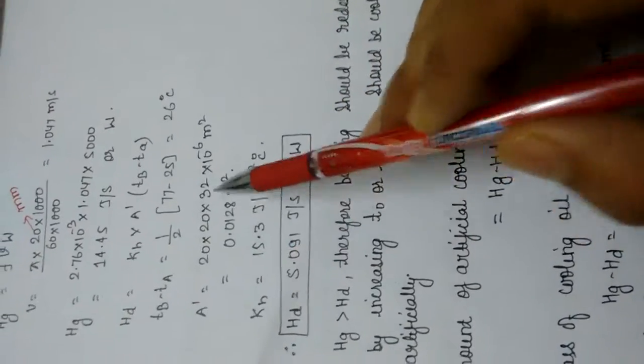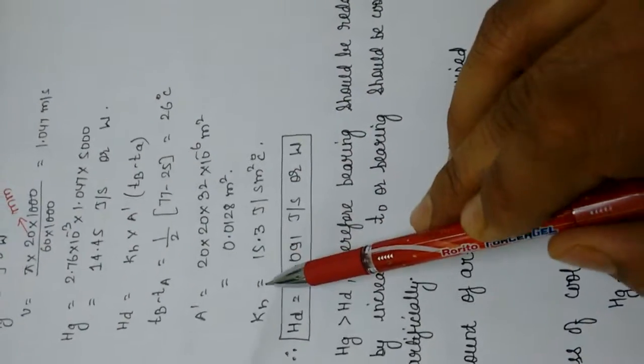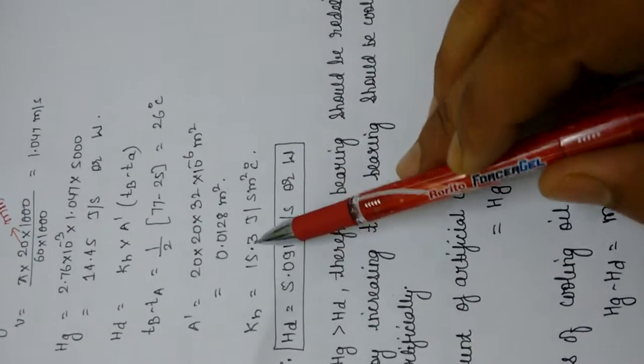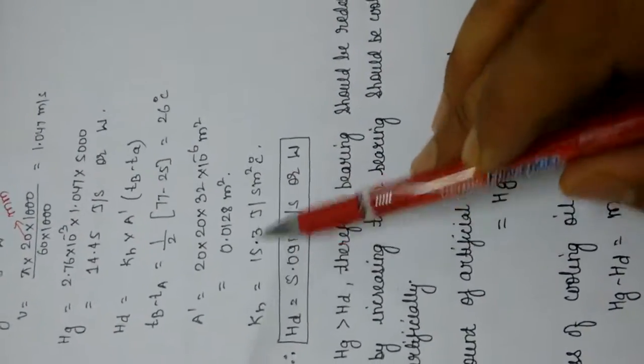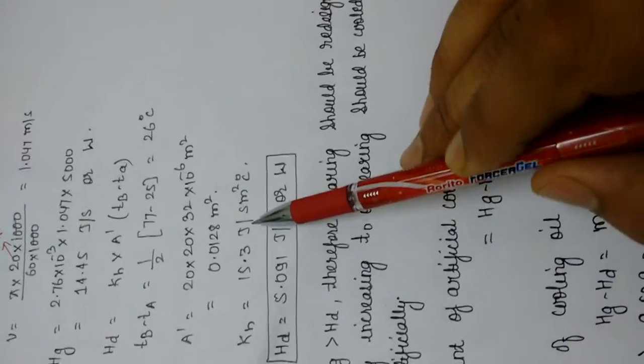A' is calculated from the formula. Kh is a heat dissipation factor equal to 15.3 Joules per second per meter square per degree centigrade.